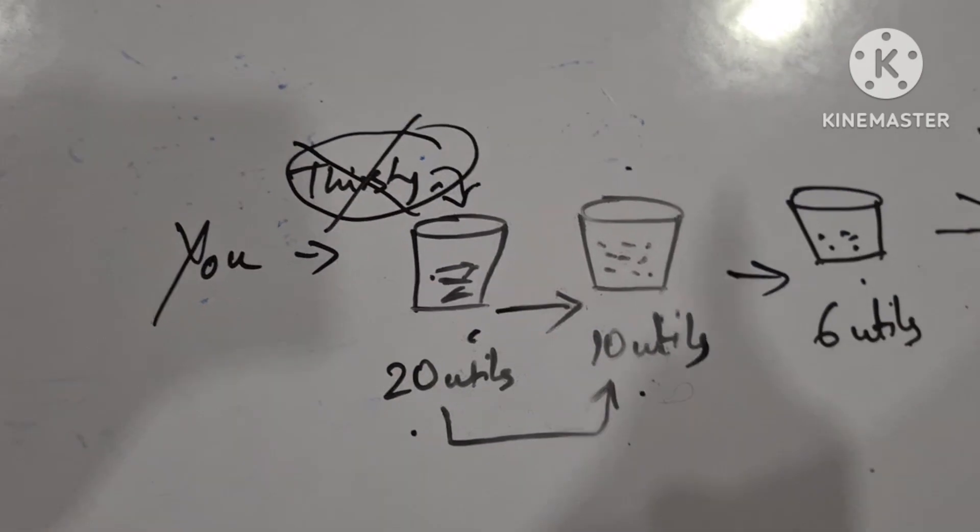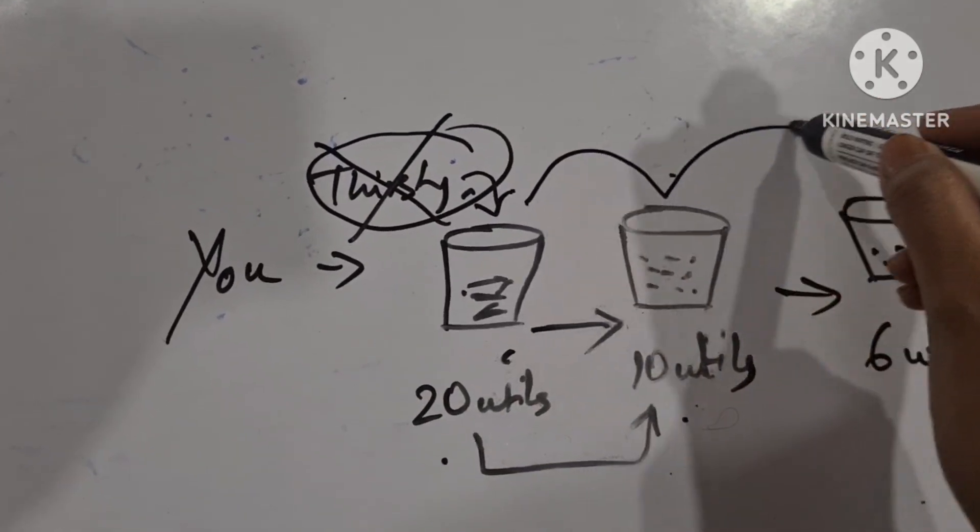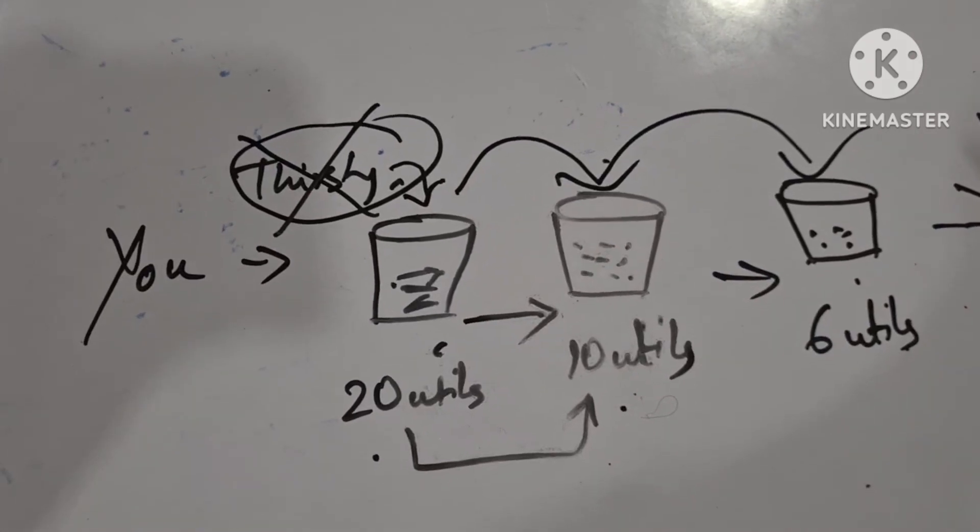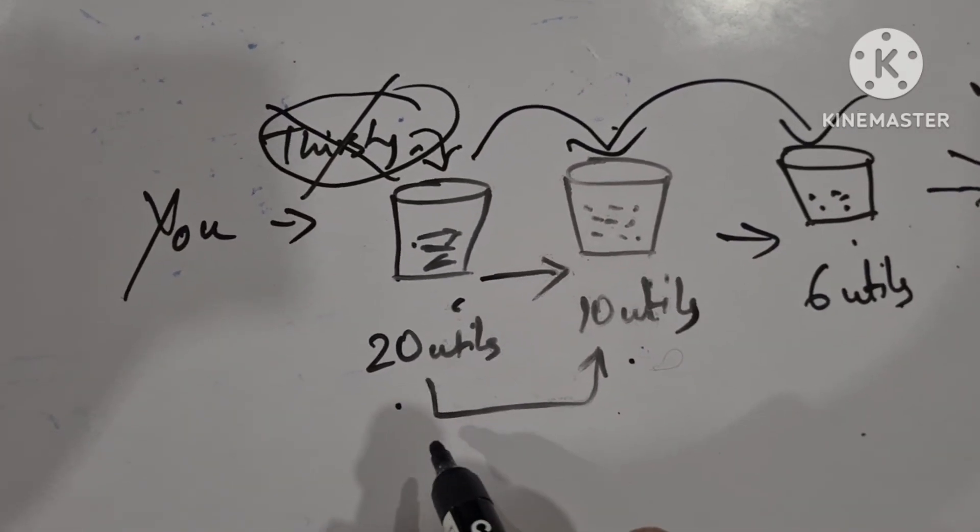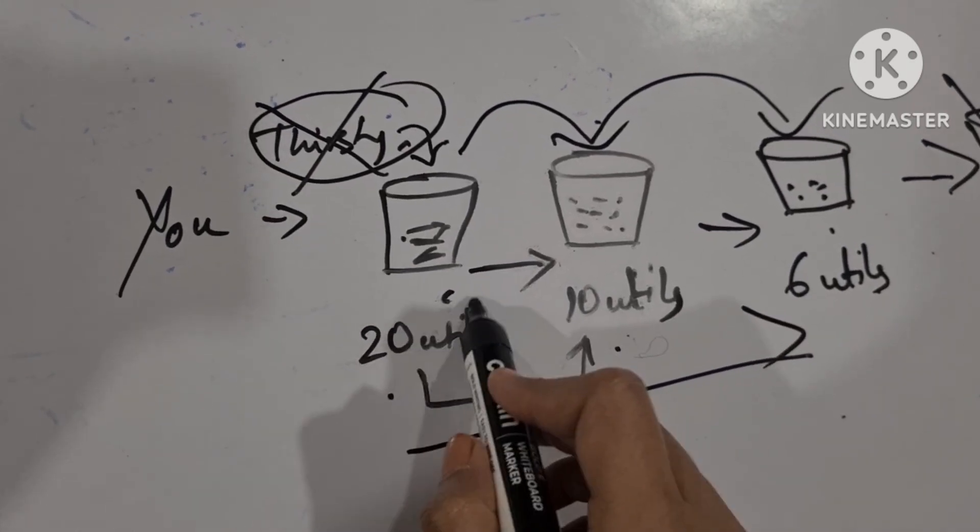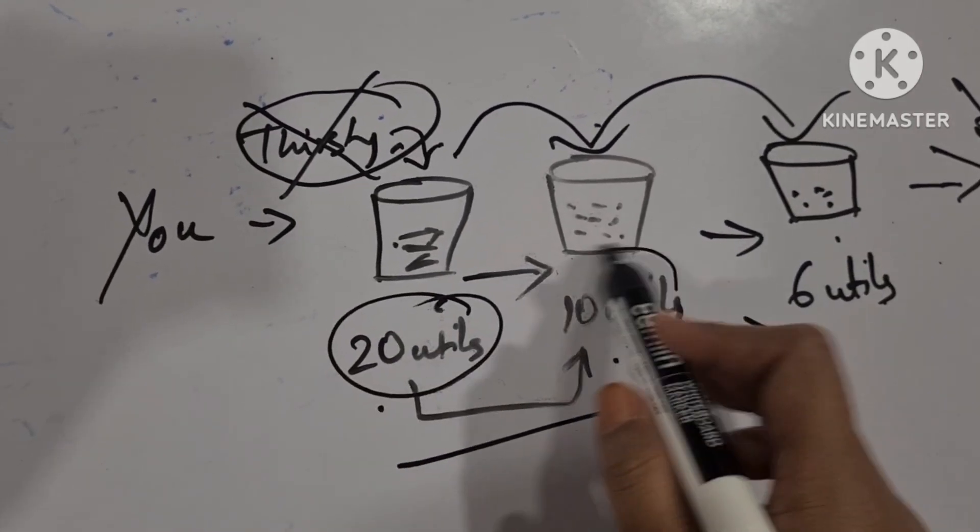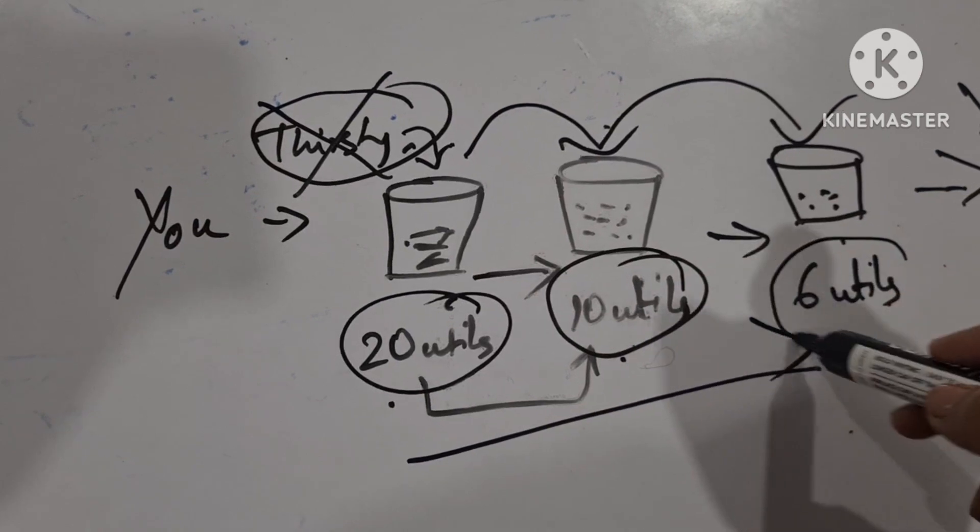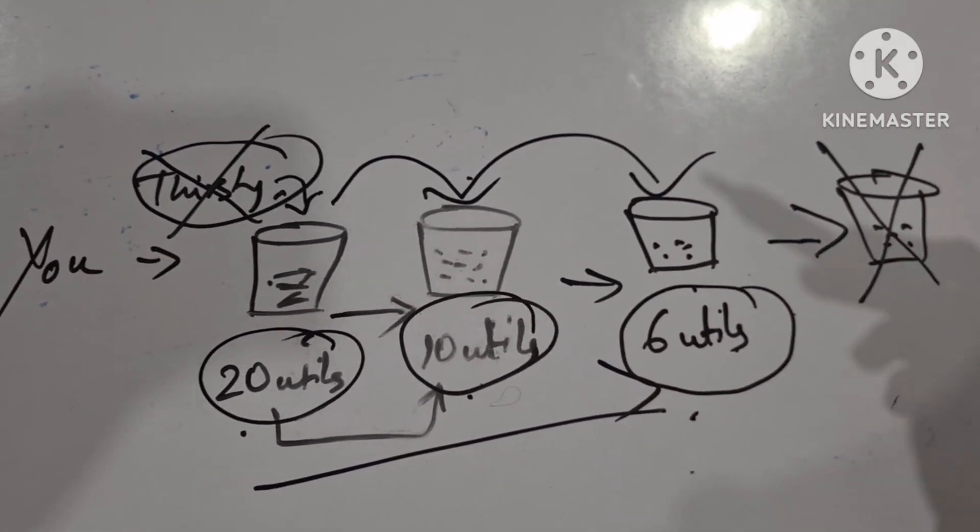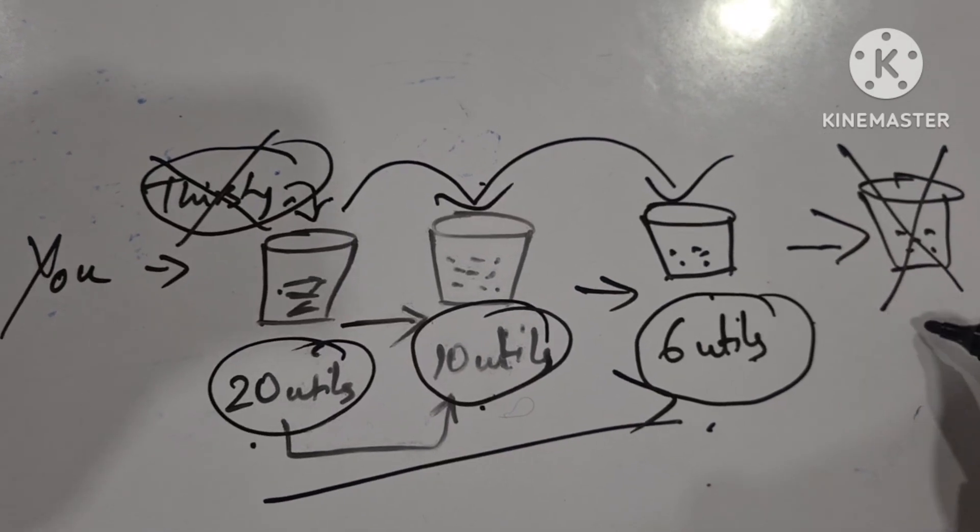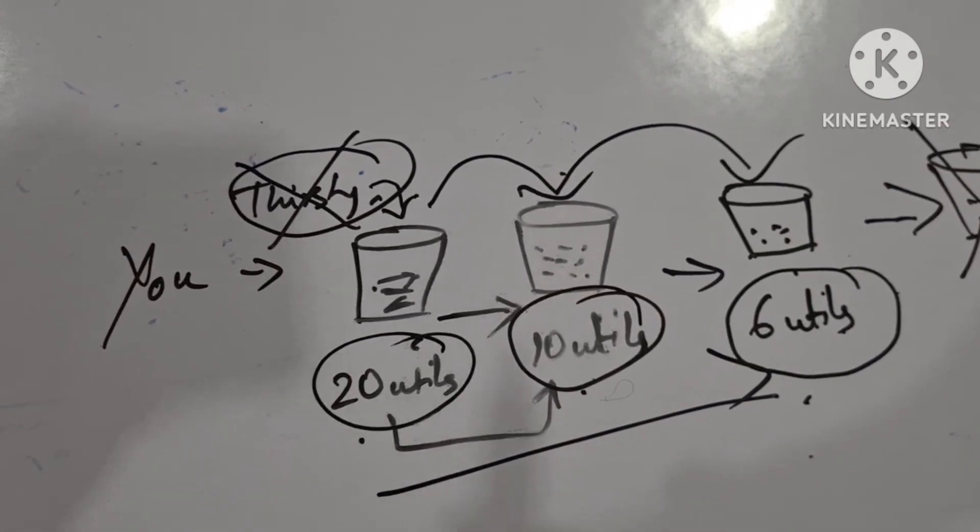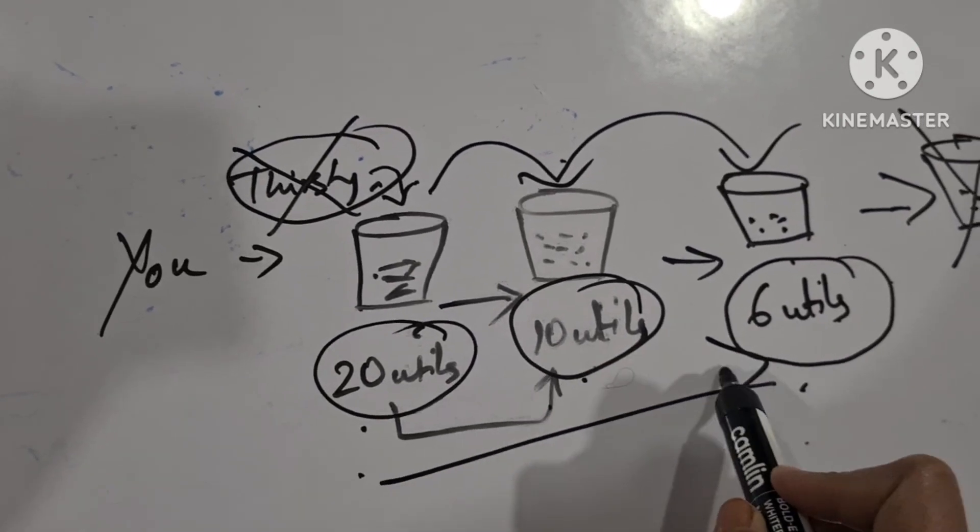So, as you take more and more number of commodities or units of commodities, the satisfaction derived goes on decreasing. First it was 20. Now it's 10. And it became 6. And if you drink one more glass of water, it will be harmful. So, this explains the law of diminishing marginal utility.